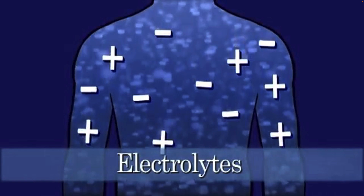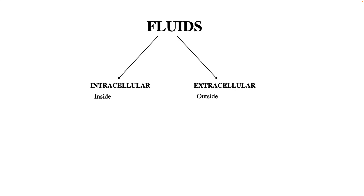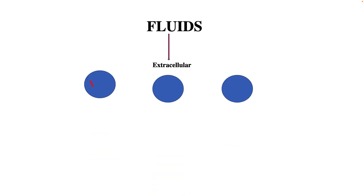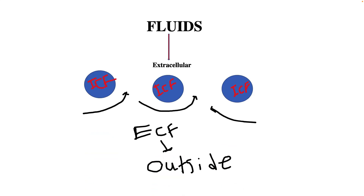Fluids are composed of two things: intracellular fluid and extracellular fluid. Intracellular fluid means anything inside the cells; extracellular fluid means anything outside the cells. For example, if we imagine three circles as cells, anything inside those circles is intracellular fluid, and anything outside is extracellular fluid.